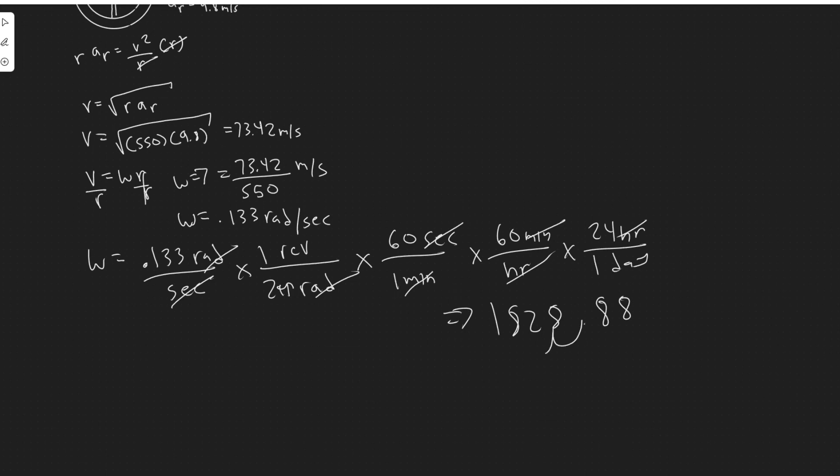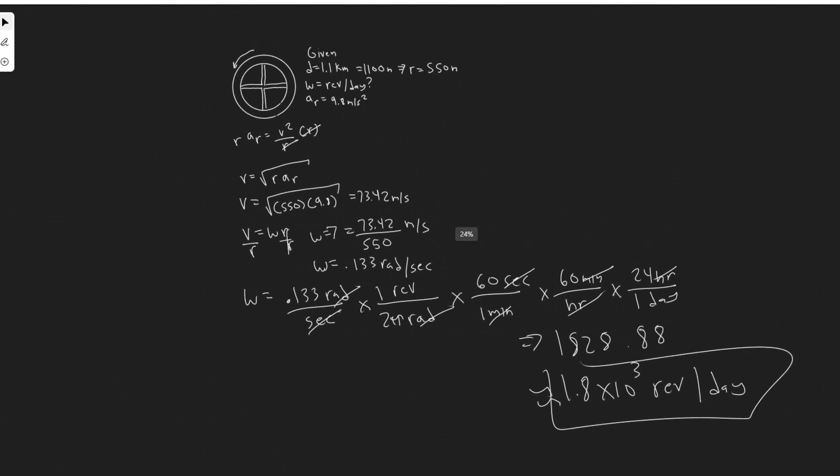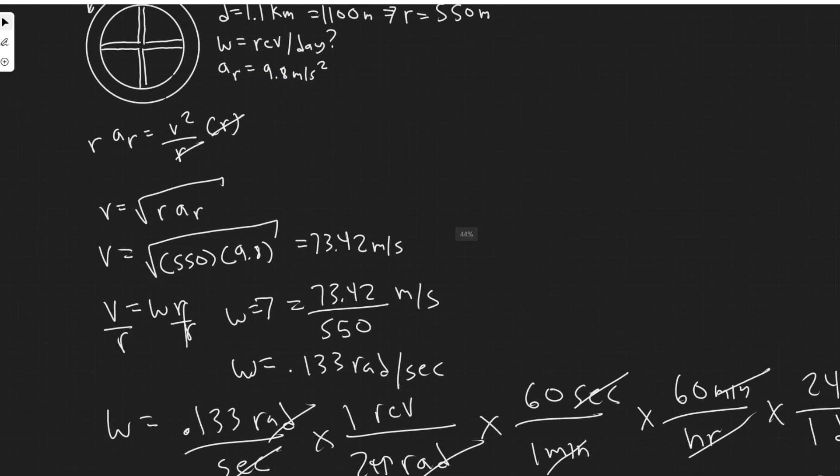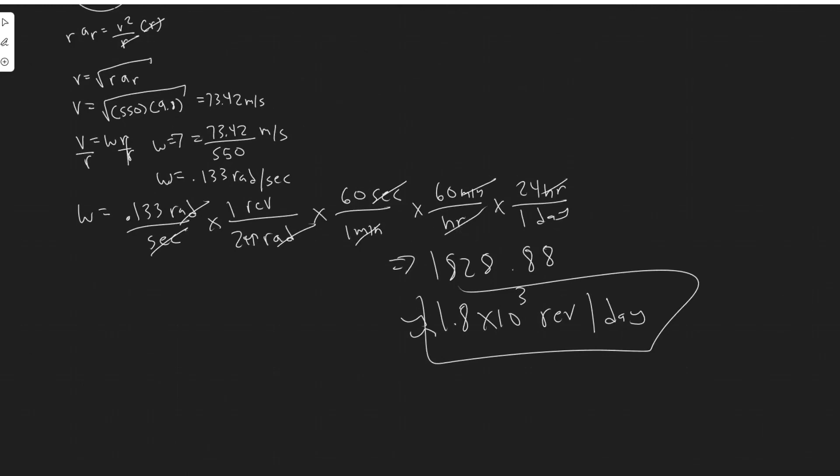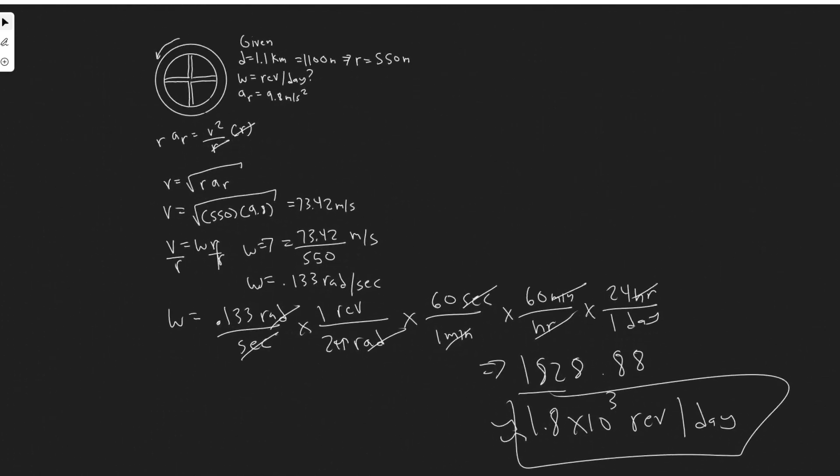And so what you're going to find is that it's equal to 1,828.88. And then just moving it over 3, it's going to be about 1.8 times 10 to the 3, right? Because we went 3 over. And then keep in mind the units now. Revolutions per day. So this is essentially the angular velocity omega, assuming you have a centripetal acceleration of 9.8 meters per second squared, or 1g. So 1.8 times 10 to the 3 revolutions per day. This right here is going to be your answer. Hopefully you found this video helpful.